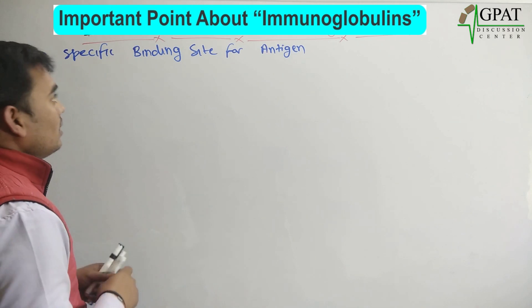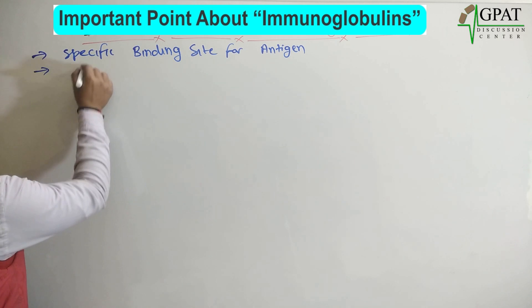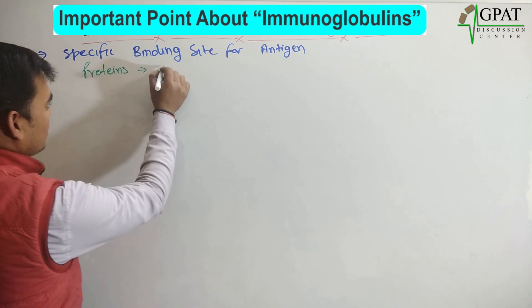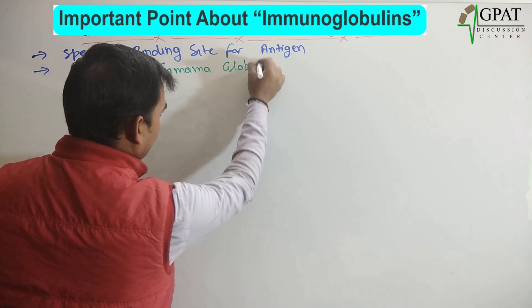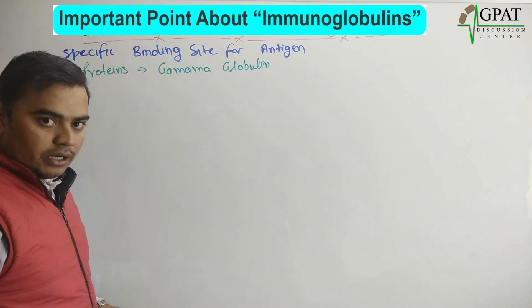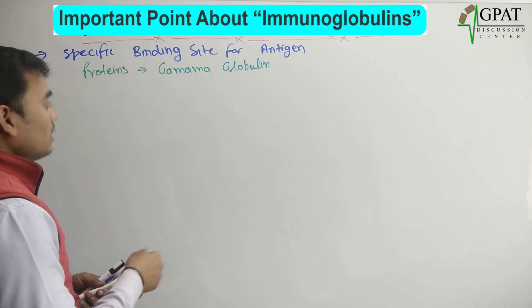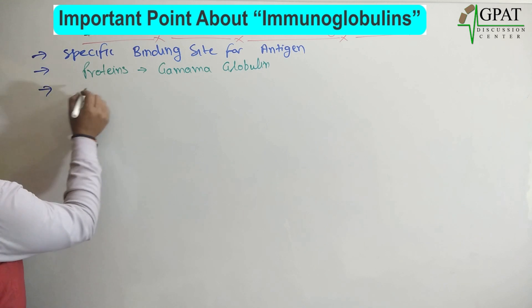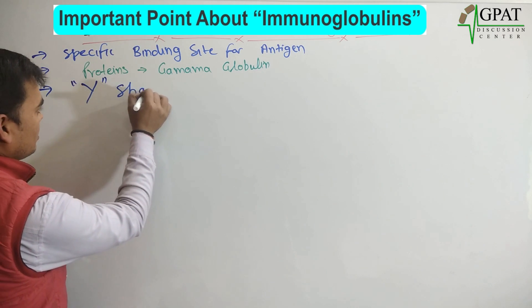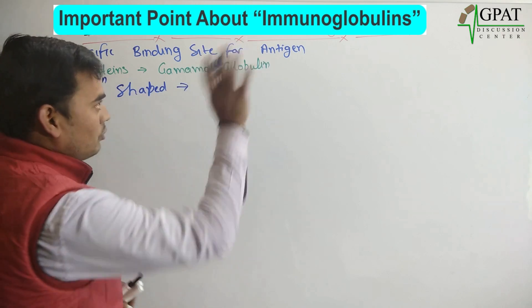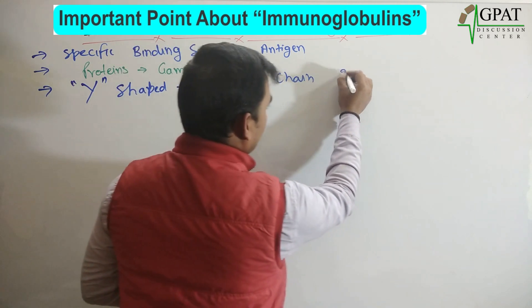The important point is immunoglobulins are made up of proteins named gamma globulin protein. All the immunoglobulins are made by the gamma globulins. These immunoglobulins have a Y-shaped structure, and all immunoglobulins have two heavy chains and two light chains.